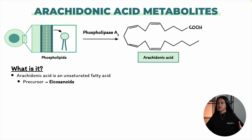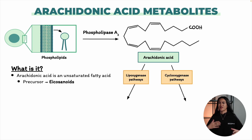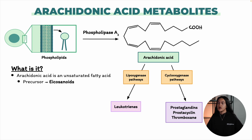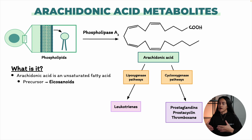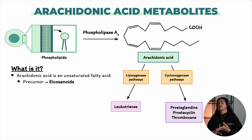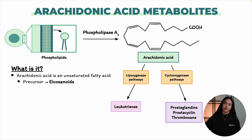Eicosanoids are a family of lipid mediators that produce local effects within the body. They're like local messengers — they help regulate things close to where they are produced. There are three main types of eicosanoids we'll focus on: prostaglandins, thromboxanes, and leukotrienes. There are other types, but these three are the most important ones we'll cover.